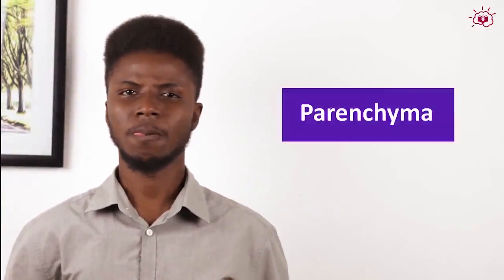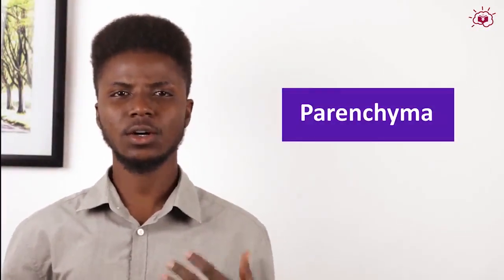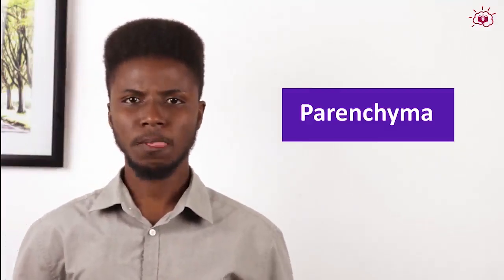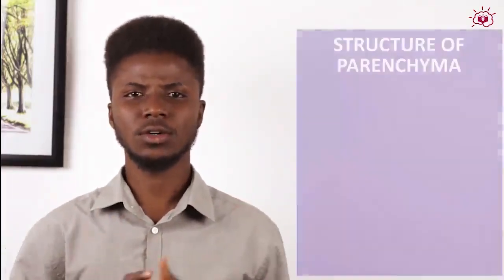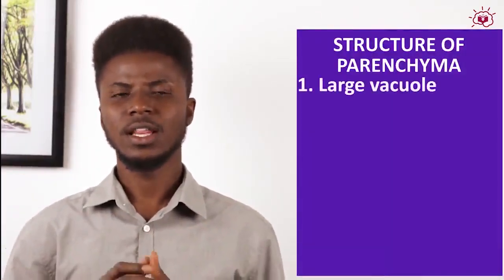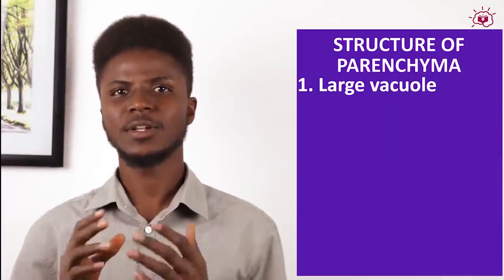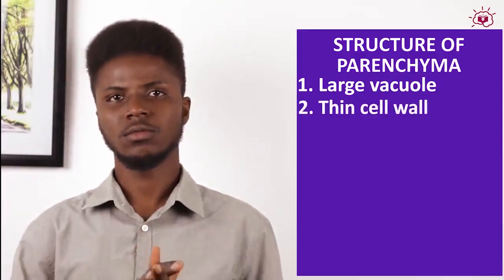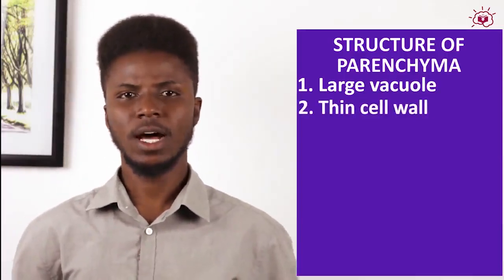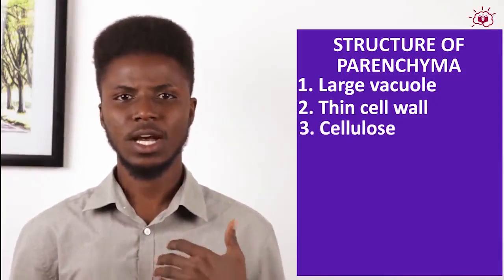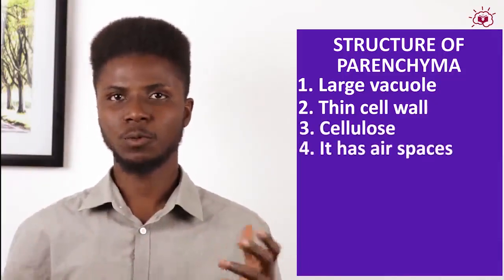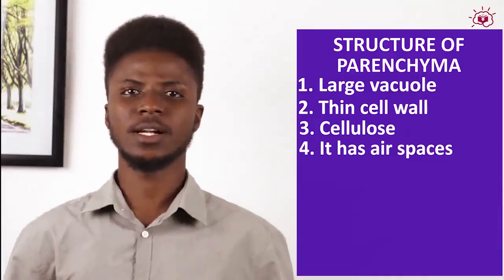The parenchyma is located in the cortex of the stem, in the phloem, the root, the leaf, and the storage tissues of the plant. Its structure consists of cells with large vacuoles and a relatively thin cell wall. It also contains cellulose and has air spaces within it. Parenchyma is the most common supporting tissue in a plant.